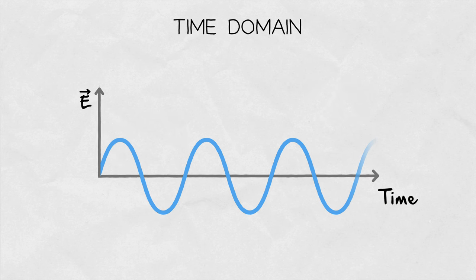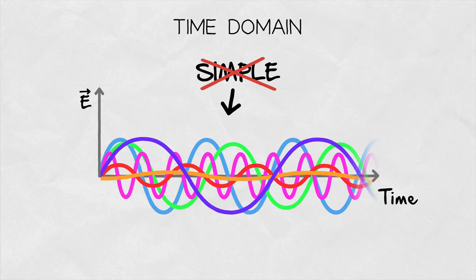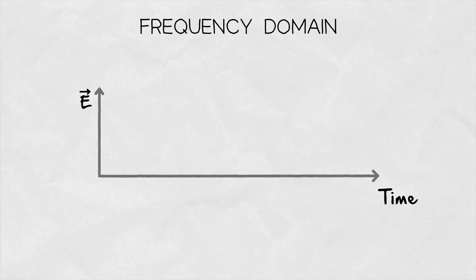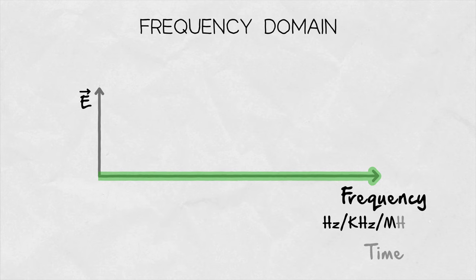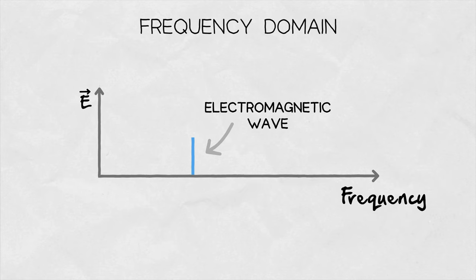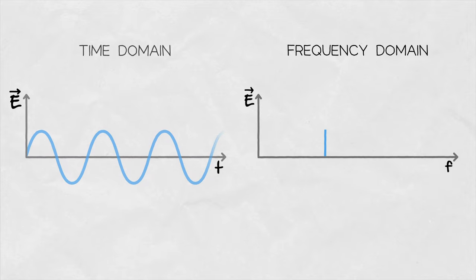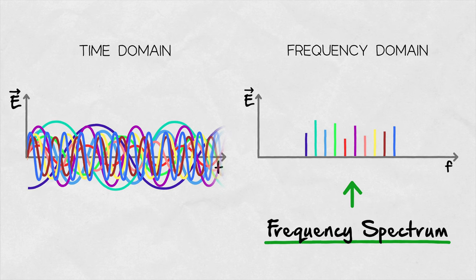For an electromagnetic wave at a single frequency, this is simple enough, but if we have multiple signals stacked on top of each other, this quickly becomes impossible to interpret. For this reason, we use the frequency domain. The x-axis of a time plot changes from time in seconds to frequency in hertz, kilohertz, megahertz, or gigahertz, depending on the frequency range of interest. An electromagnetic wave is now visualized as a spike at its frequency, and the height represents its amplitude. If we add frequencies to the signal, it becomes much easier to see what's going on compared to the time domain. This representation of a signal is called its frequency spectrum.